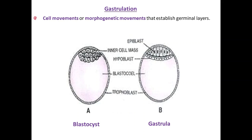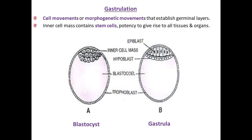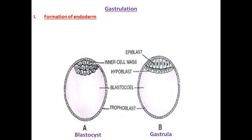The inner cell mass contains stem cells which have the potency to form all the tissues and organs. That's why the epiblast and hypoblast, both going to form the future embryo, are important. Starting with the first stage: how the rearrangement and the formation of germ layers starts. The first stage is the formation of endoderm. In gastrulation, the formation of endoderm occurs first. So the first formed germinal layer in embryonic development is the endoderm.